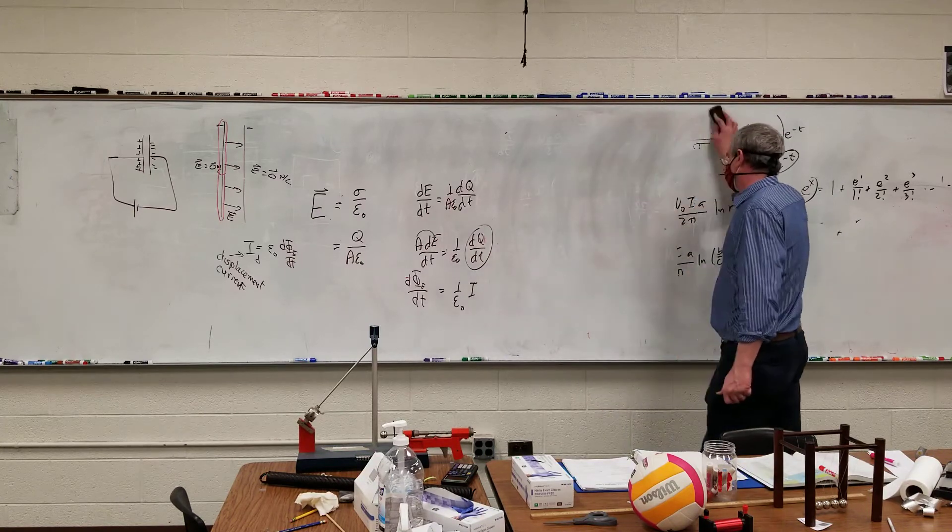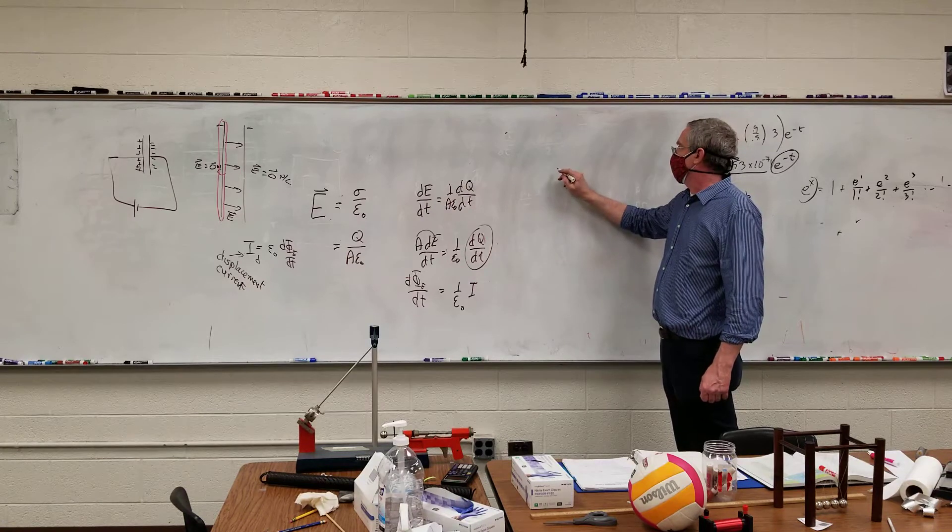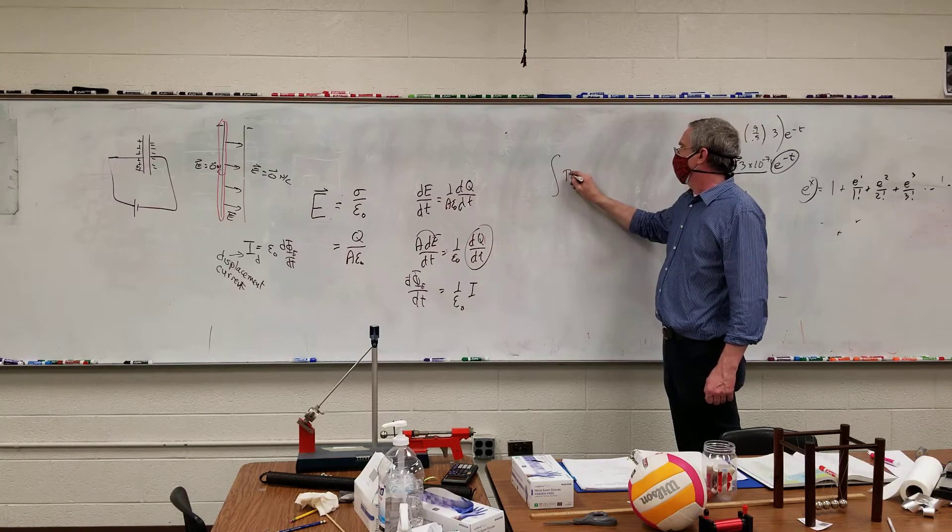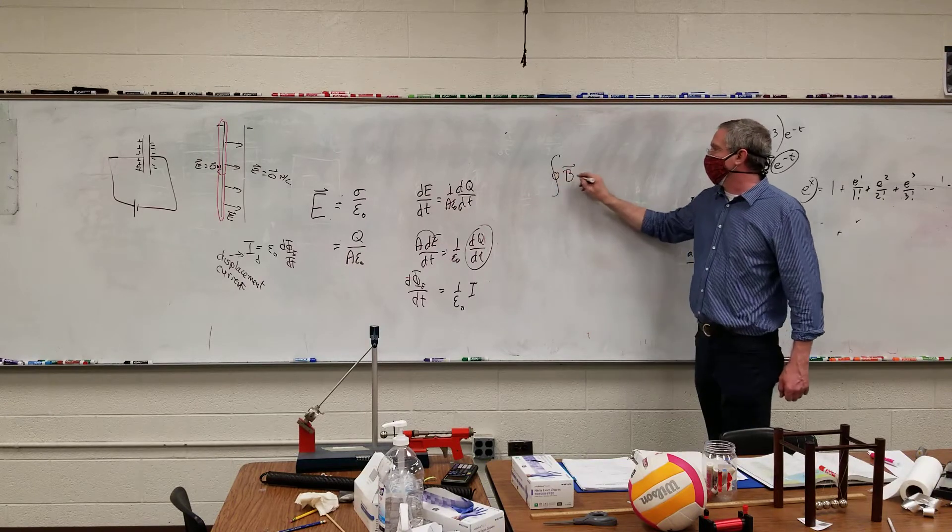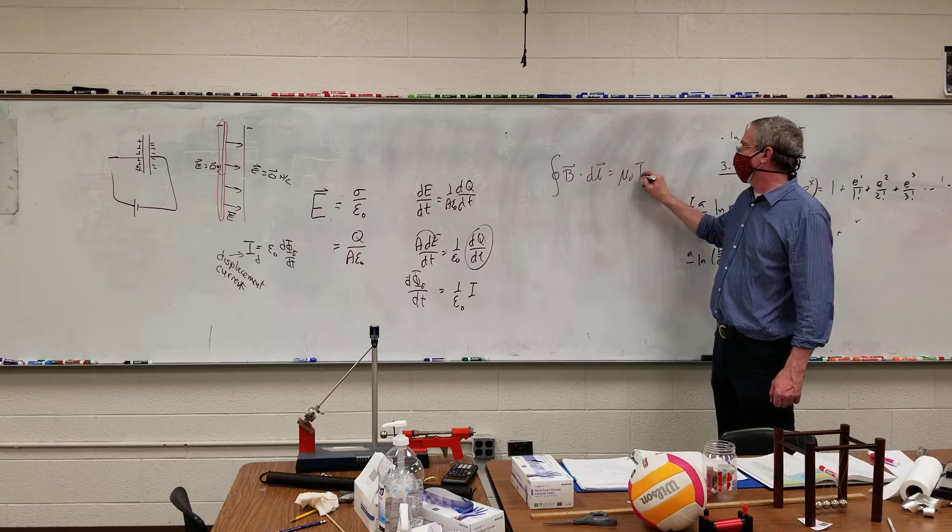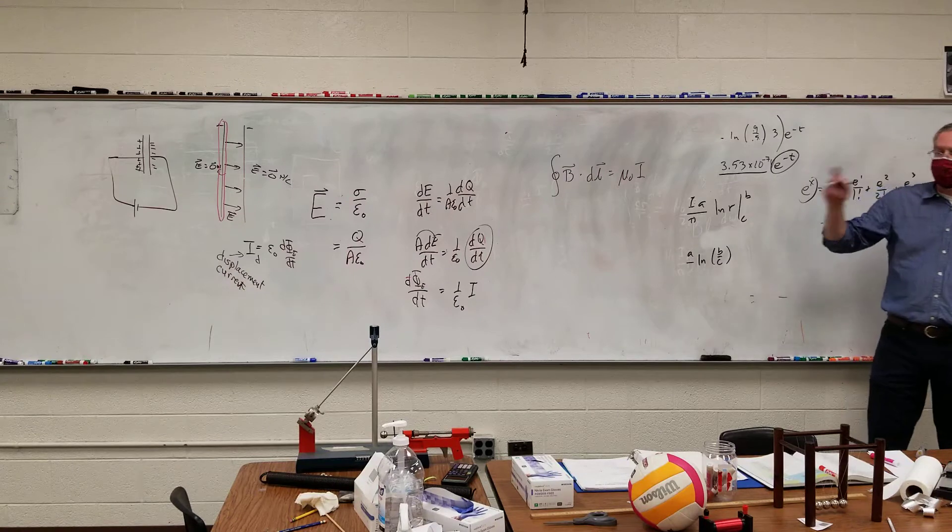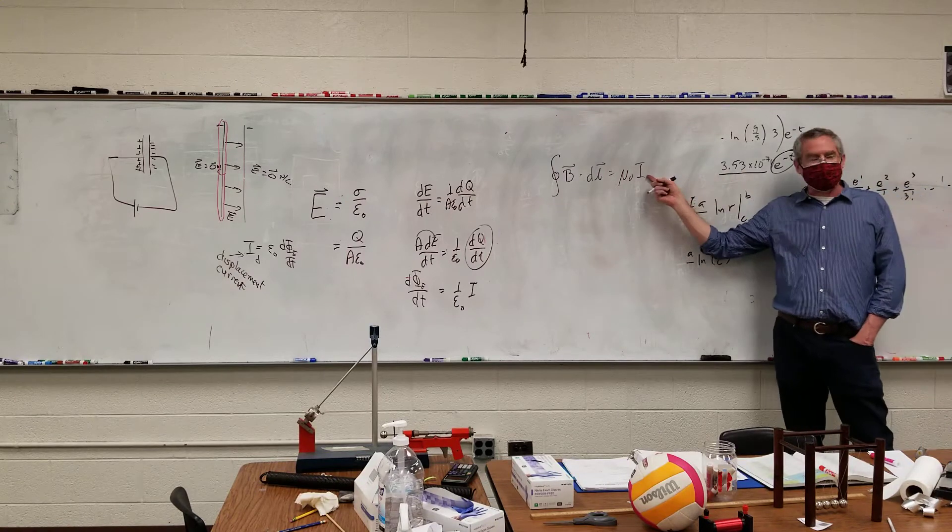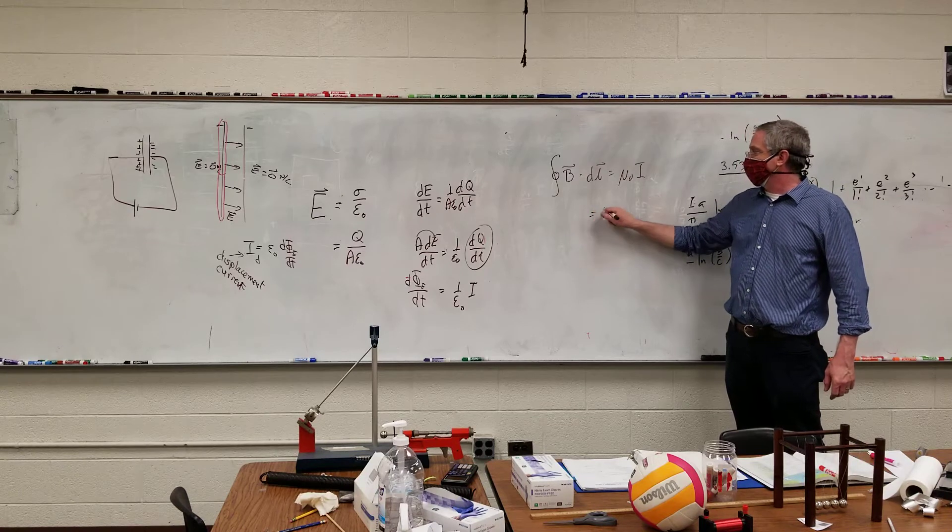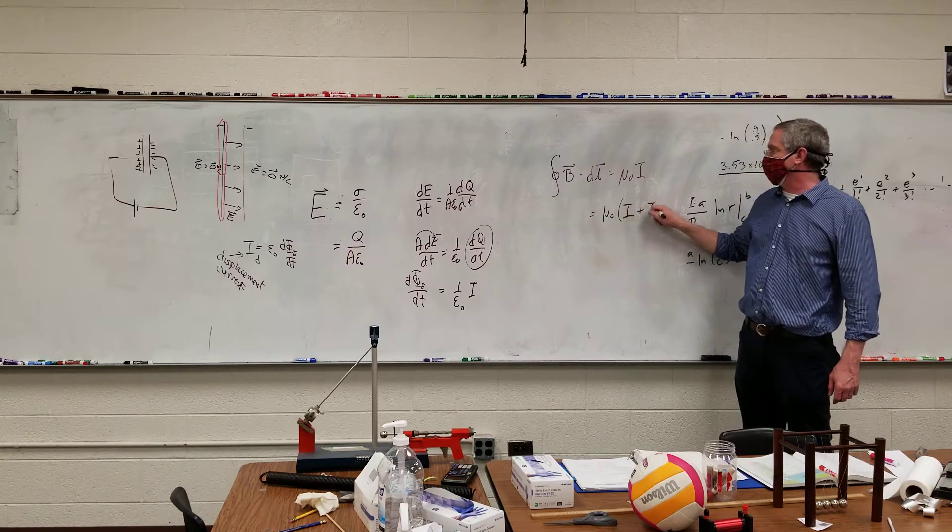Let's bring back Ampere's law. Ampere's law says that around some closed loop, B dot DL is equal to mu naught I. That's Ampere's law. But if I have two different types of current, this current is dealing with the moving charge, but I have this other current dealing with the changing electric field.